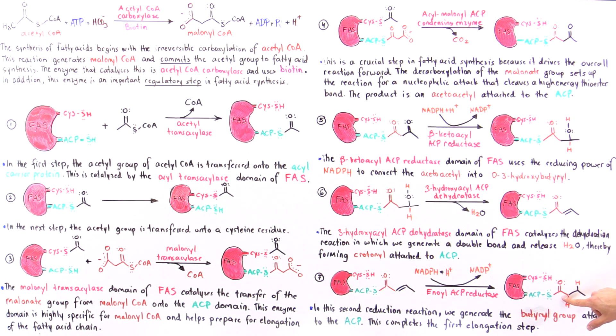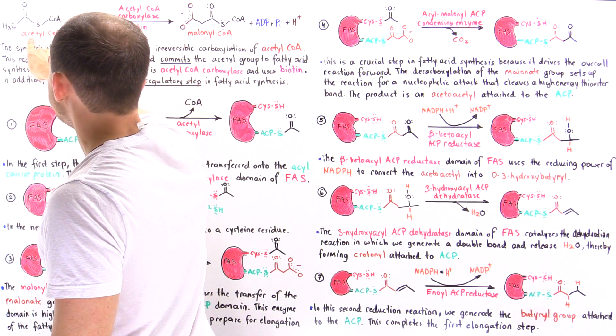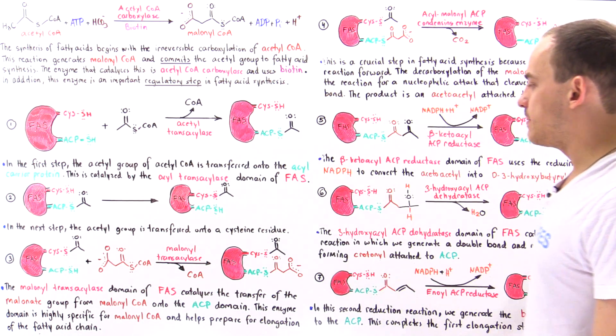Carbon atoms. So one, two, three, four. So two of those carbon atoms basically came from this acetyl coenzyme A molecule and the other two came from this acetyl coenzyme A molecule.